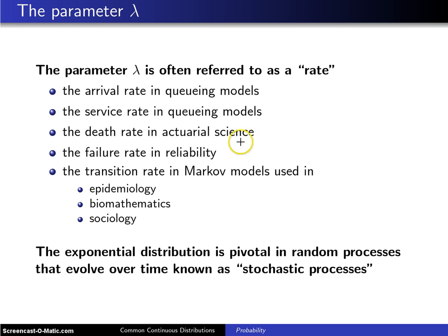In actuarial science, lambda is referred to as the death rate. In reliability, lambda is always referred to as the failure rate.